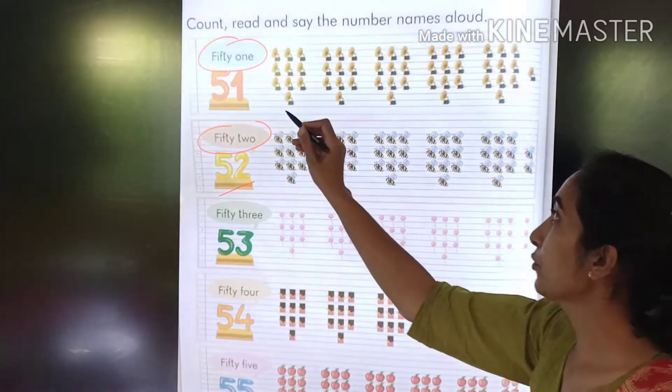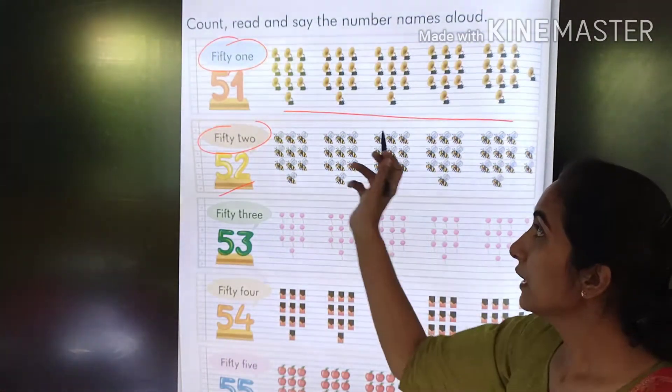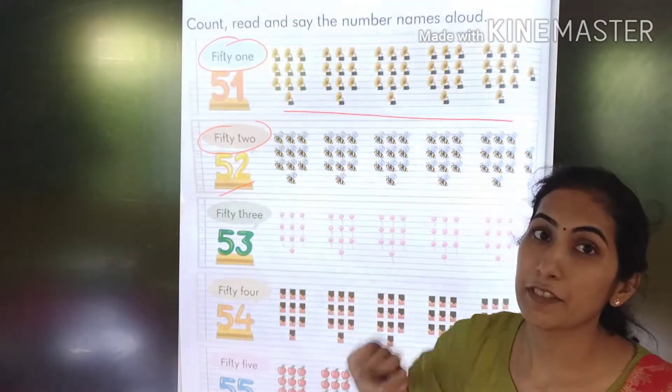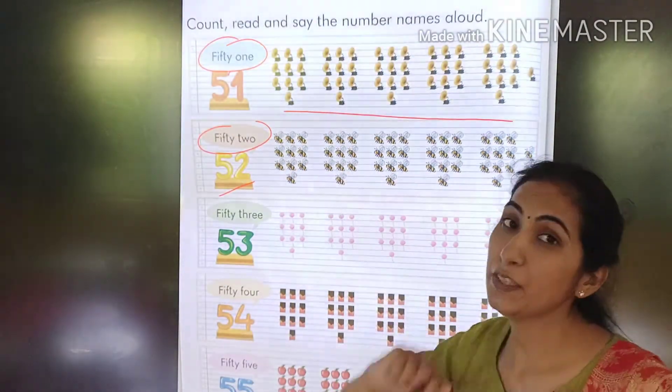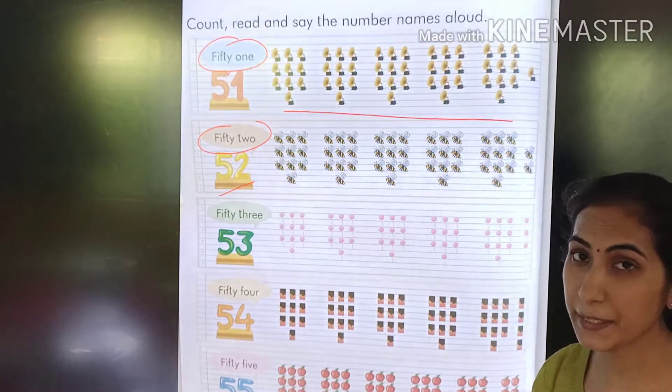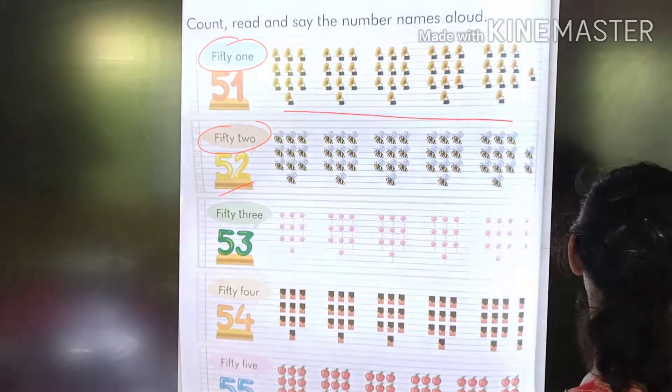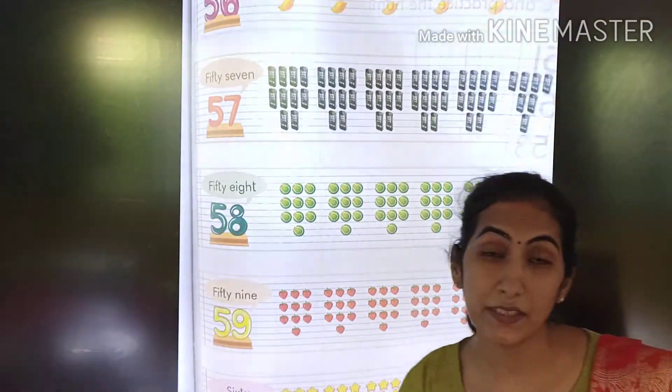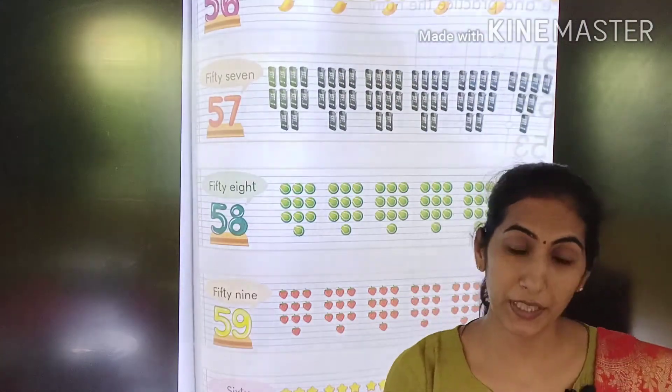So what you have to do? You have to count all this and say 51, F-I-F-T-Y O-N-E. So you have to learn this, right? Now this, page number 90 and 91 is your fun work. Okay?